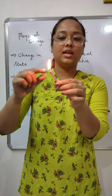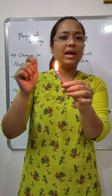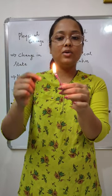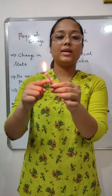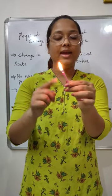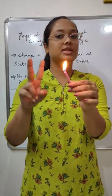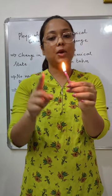the cotton wick which is getting converted into a black colored compound, and the wax is melting. There are two processes taking place.